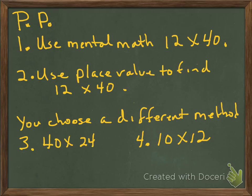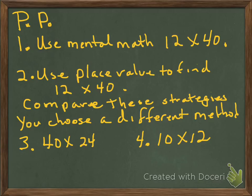All right, boys and girls, here are your practice problems for tonight. The first one, I want you to use the mental math method that I just showed you with halving and doubling to solve 12 times 40. Now, I want you to use place value to find 12 times 40. Then I want you to compare the two methods. Compare these methods. Which one did you like the best? Then I want you to compare these strategies. Then I want you to go back and choose a different method. Solve number 3 is 40 times 24, and number 4 would be 10 times 12. I'm challenging you to use the different strategies that you learned today or that you were introduced to today to solve these equations.